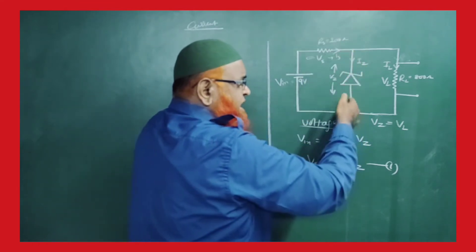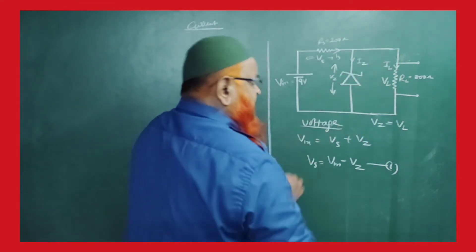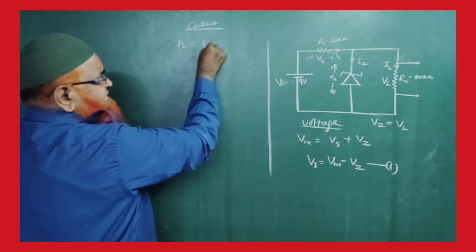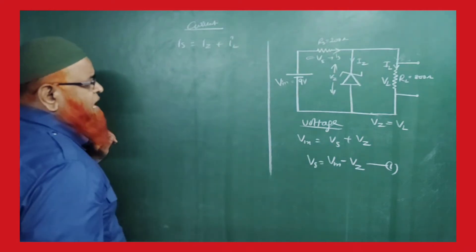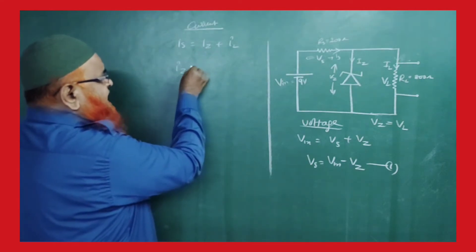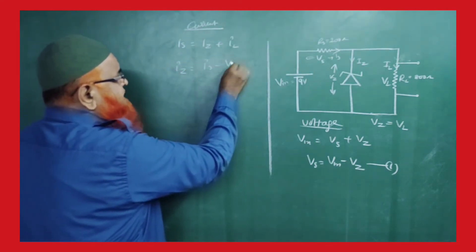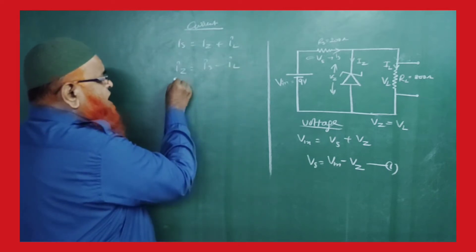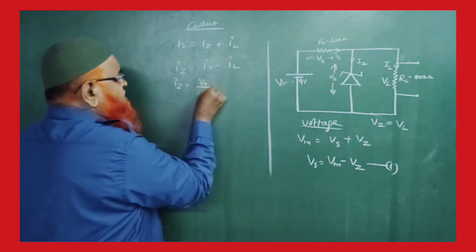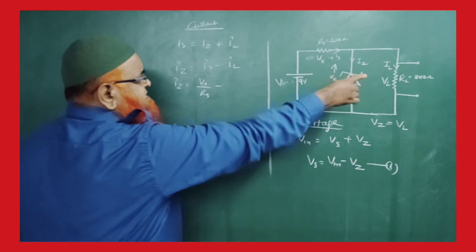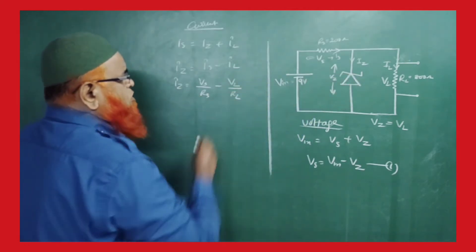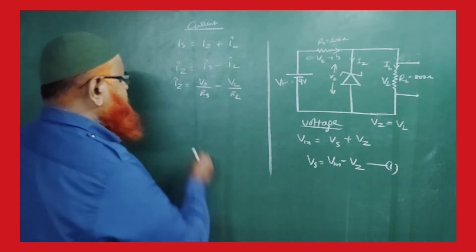Part of the current passes through the Zener diode. Therefore we can write: Is equals Iz plus IL. To find Iz, we write Iz equals Is minus IL. Now, Is is nothing but Vs divided by Rs, and IL is nothing but VL divided by RL, according to Ohm's law: I equals V divided by R.